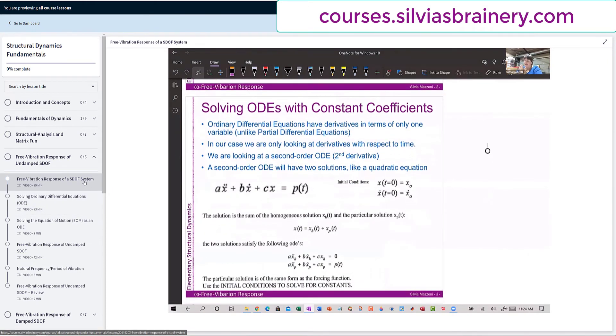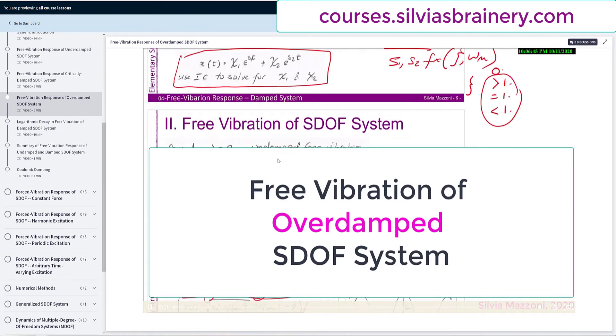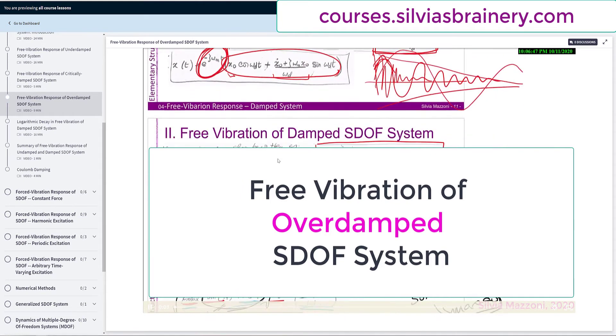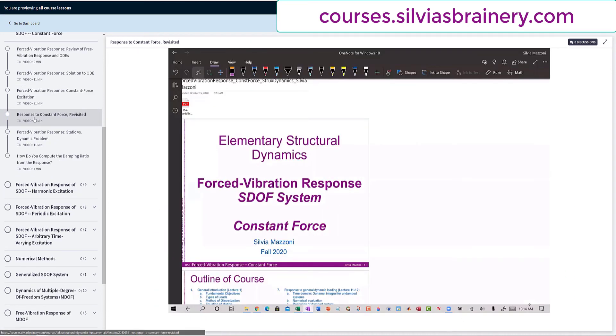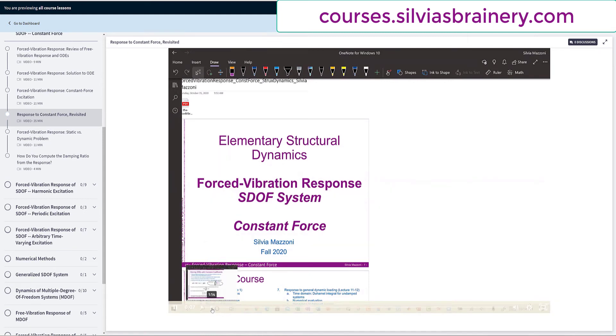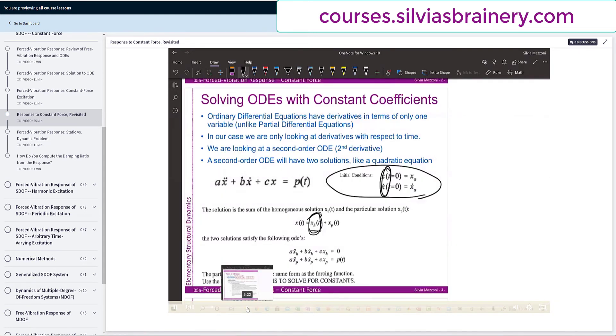What we have in this, if we do the third case now - we did zeta equal to zero, less than one, and equal to one. So today we're done with free vibration and we're moving on to forced vibration response. This is the free vibration response.